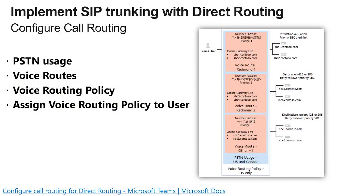Talking briefly about SIP trunk connectivity from the SBC to direct routing, the next component is the different call routing features and functionalities — all the elements you can define and control to manage call routing as you see fit. This includes understanding what PSTN usages are, voice routes, voice routing policies, and how to assign a voice routing policy to an actual user.